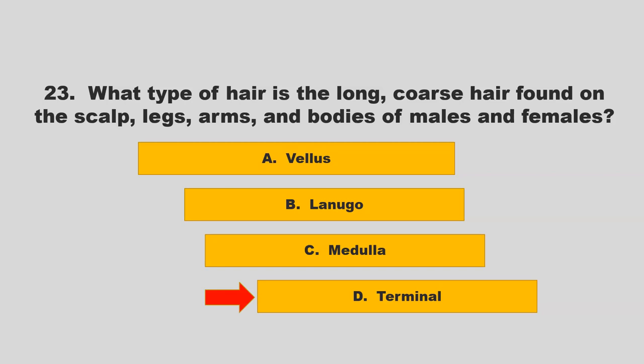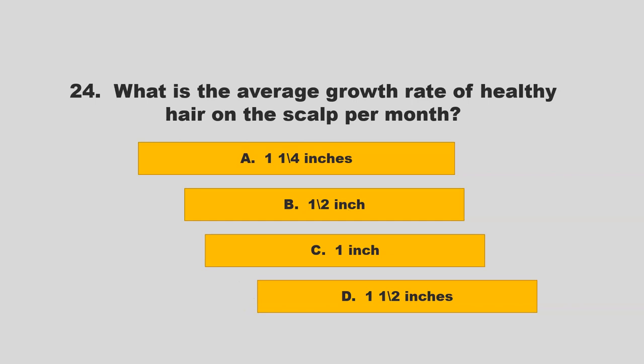What is the average growth rate of healthy hair on the scalp per month? Is it one and one-fourth inches, a half inch, one inch, or one and a half inches? If you chose B, half inch, you are correct.